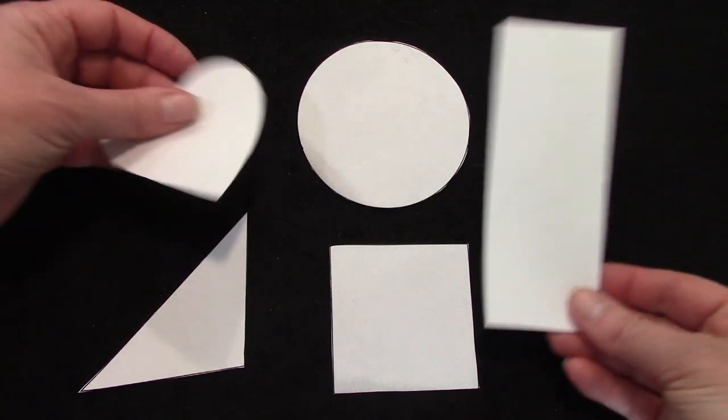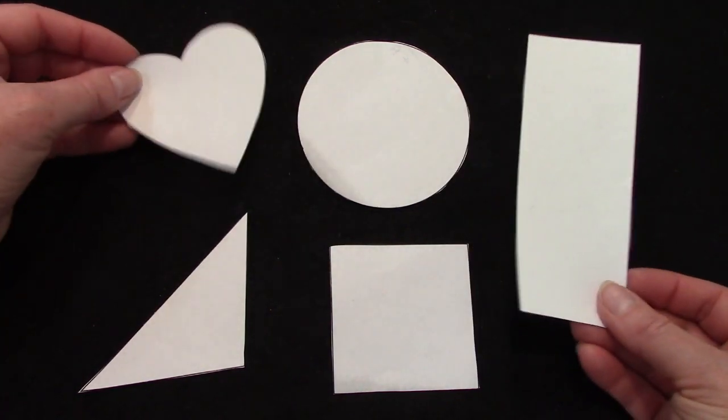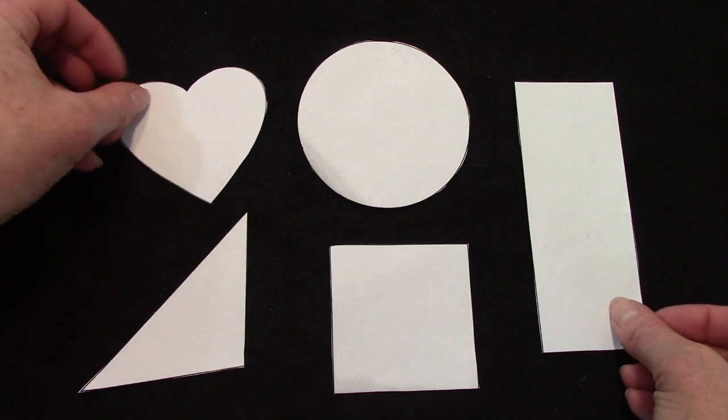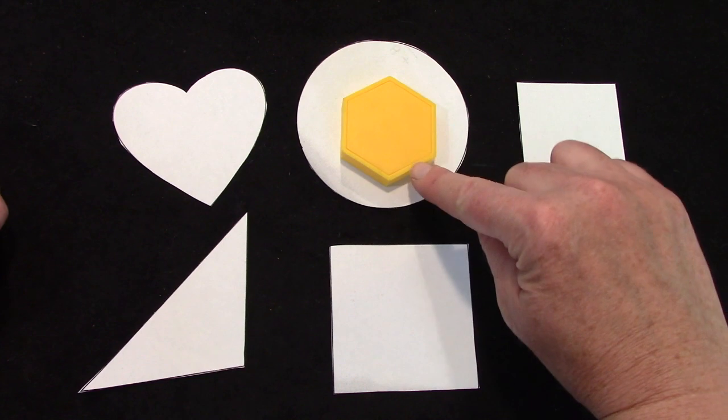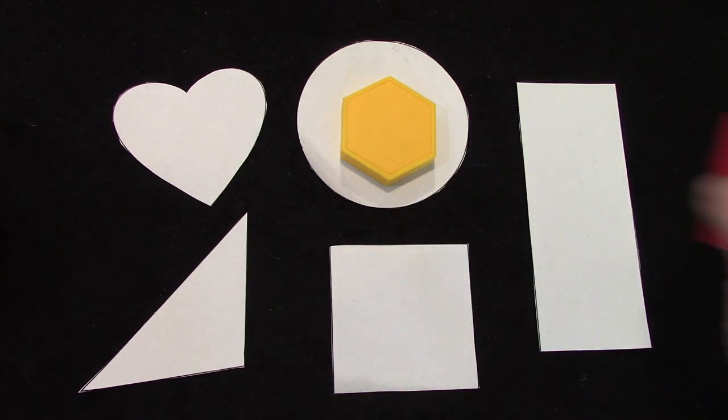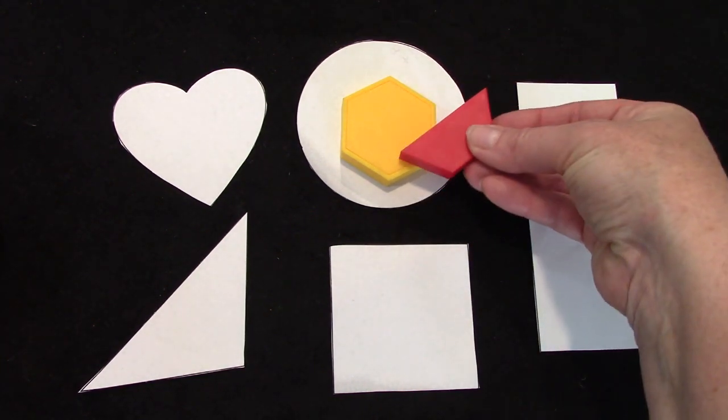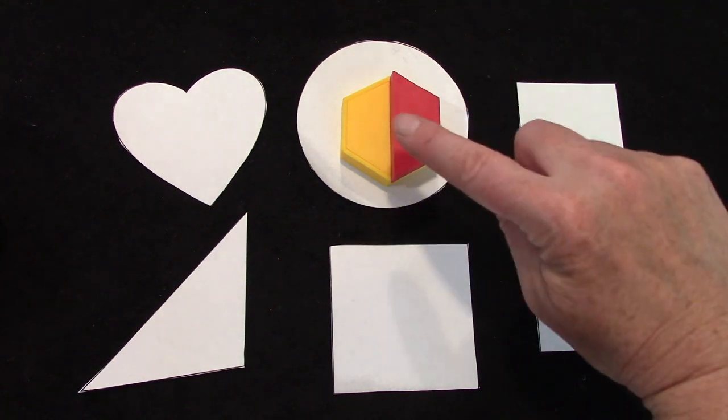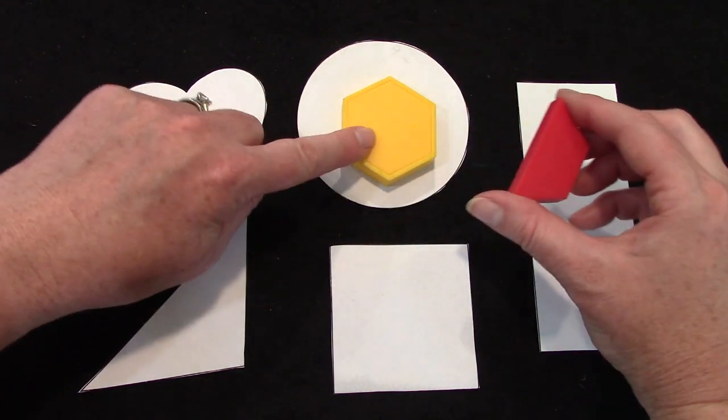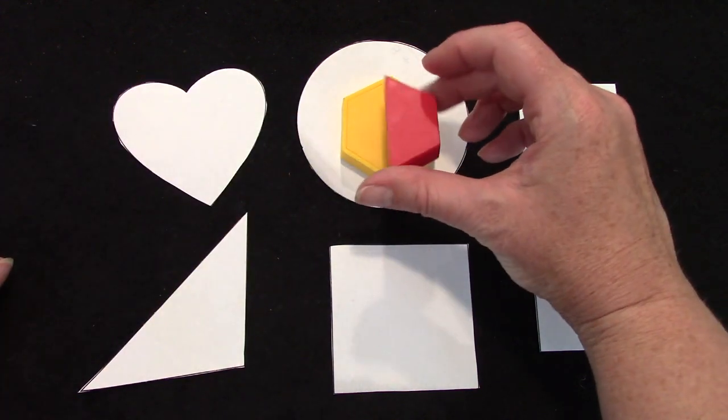Class, today we are going to be dividing a shape in half and coloring half of the shape. We've looked at the hexagon a lot and we've talked about what shape covers half of it. We have a hexagon and what shape covers half of it?